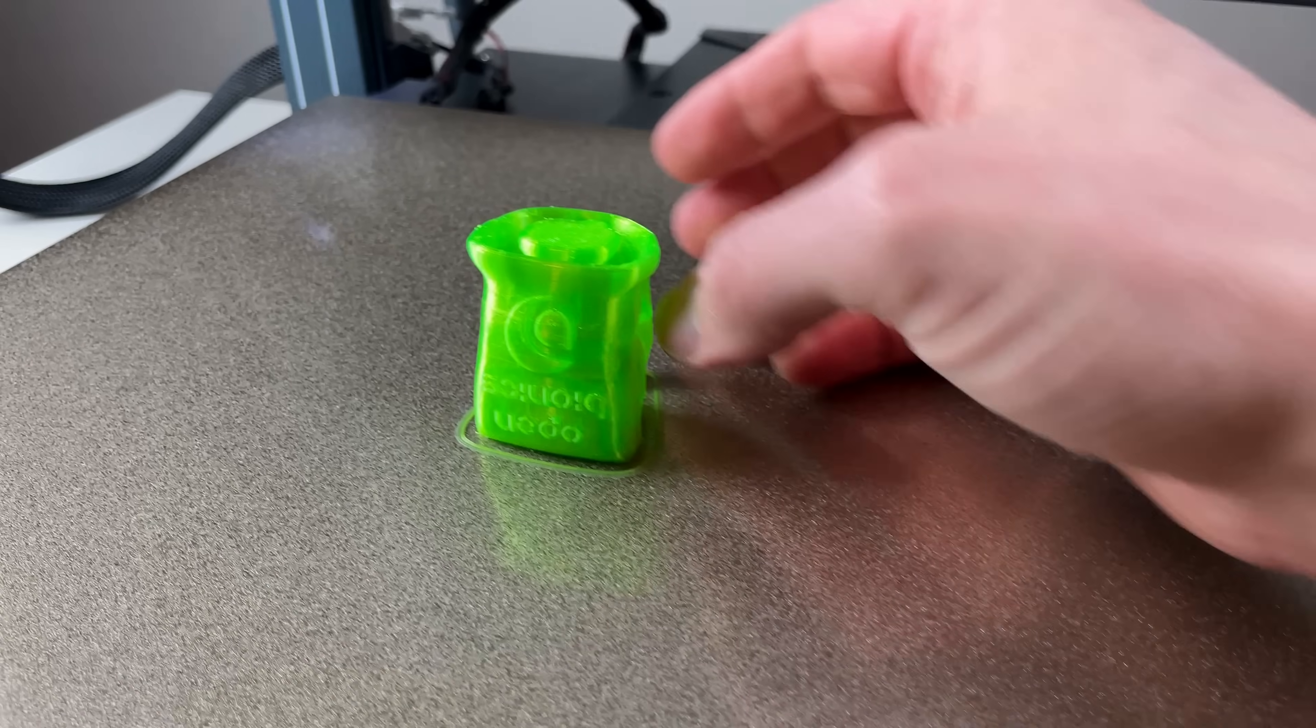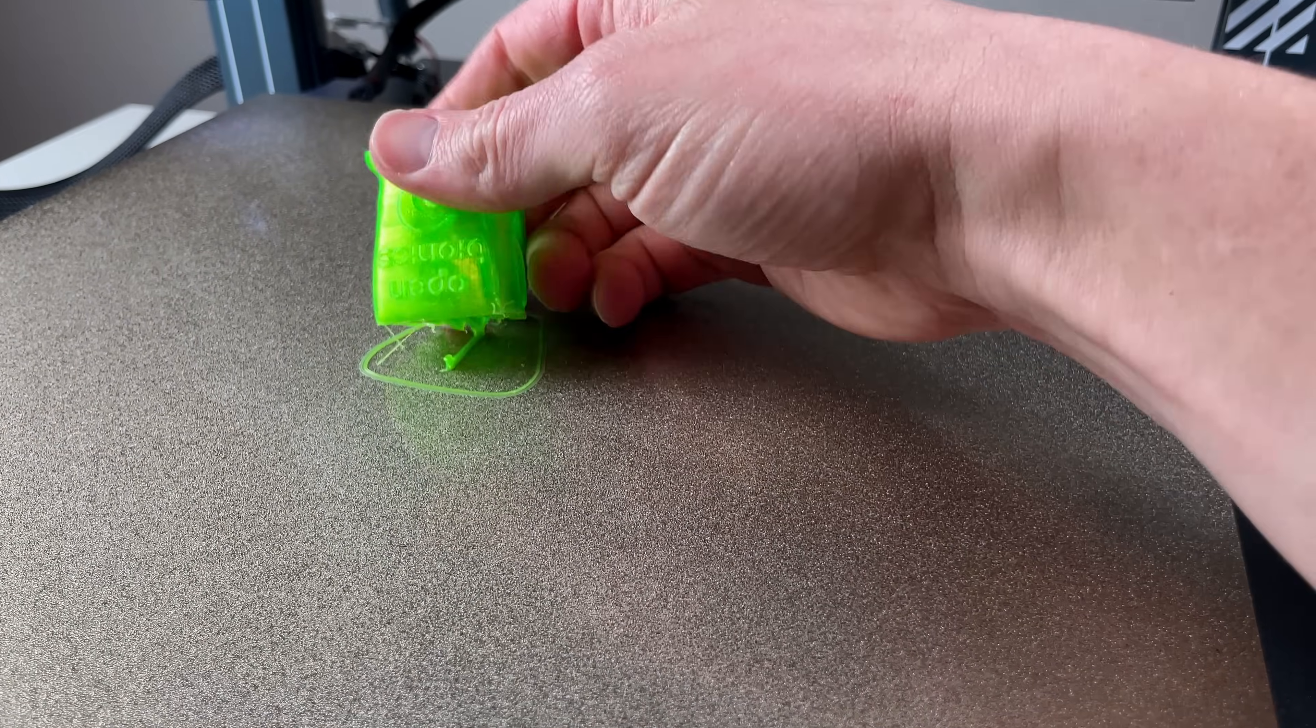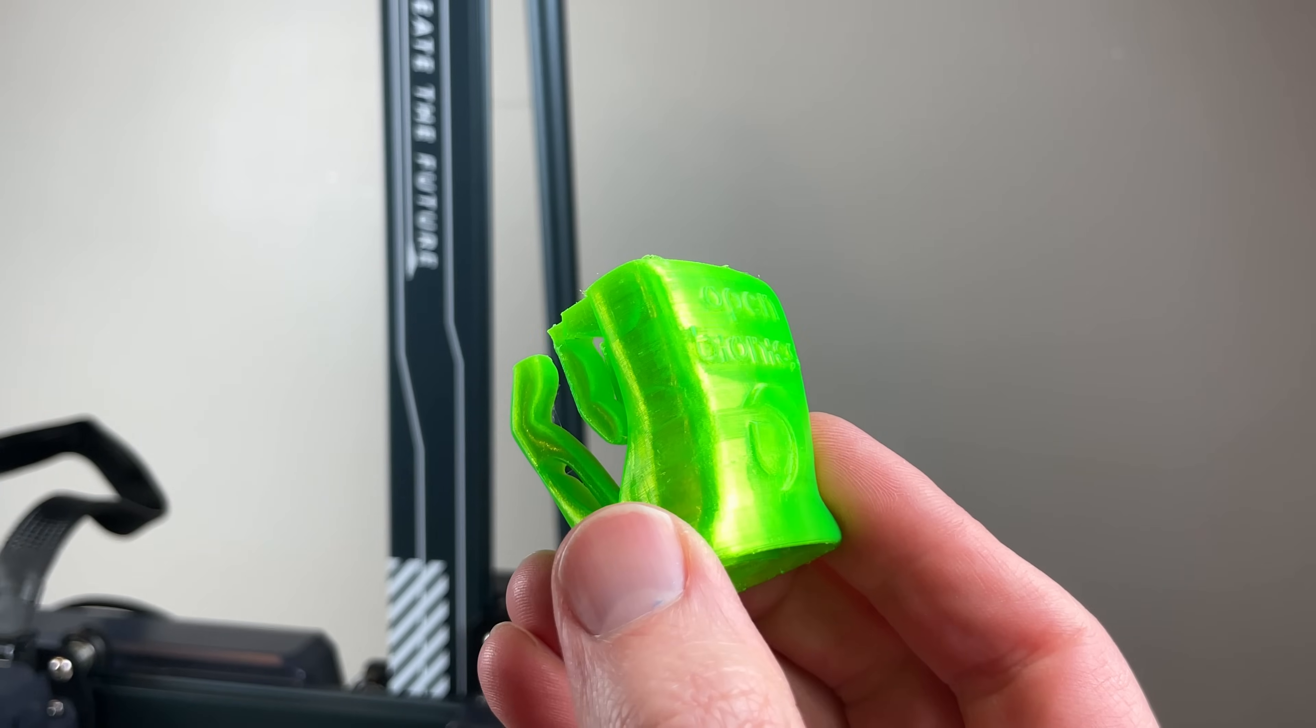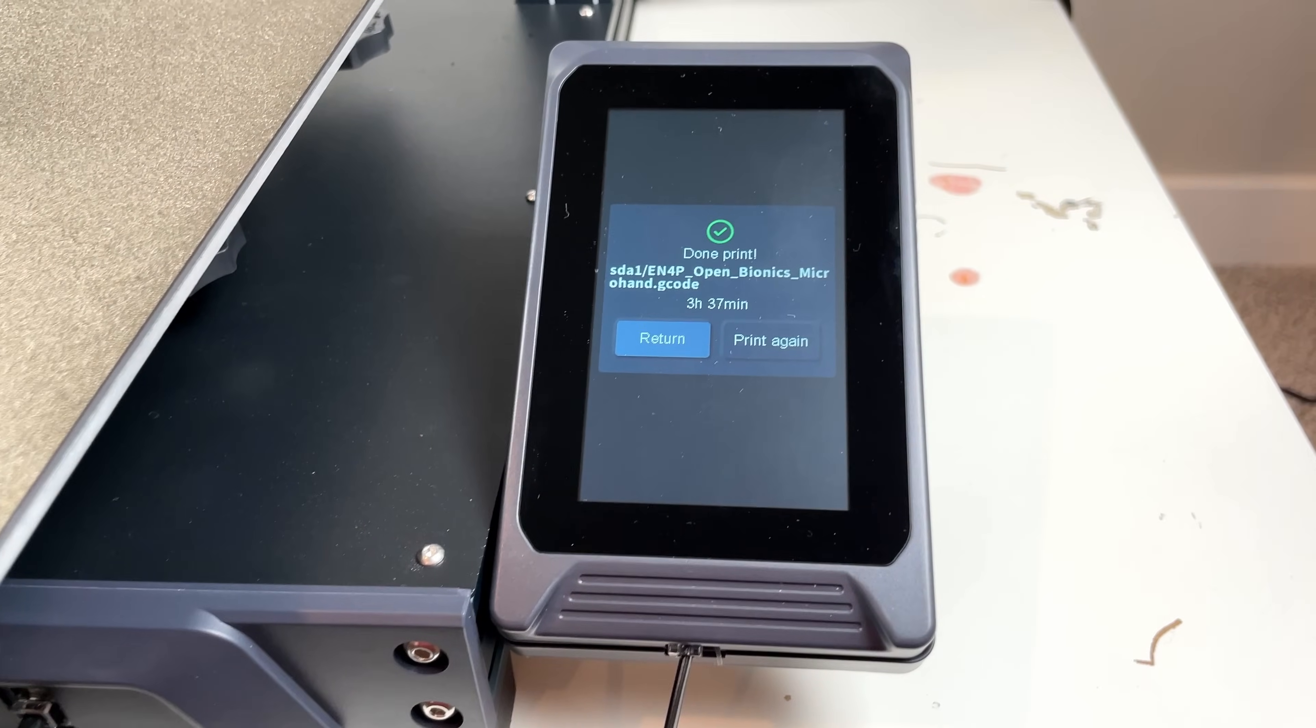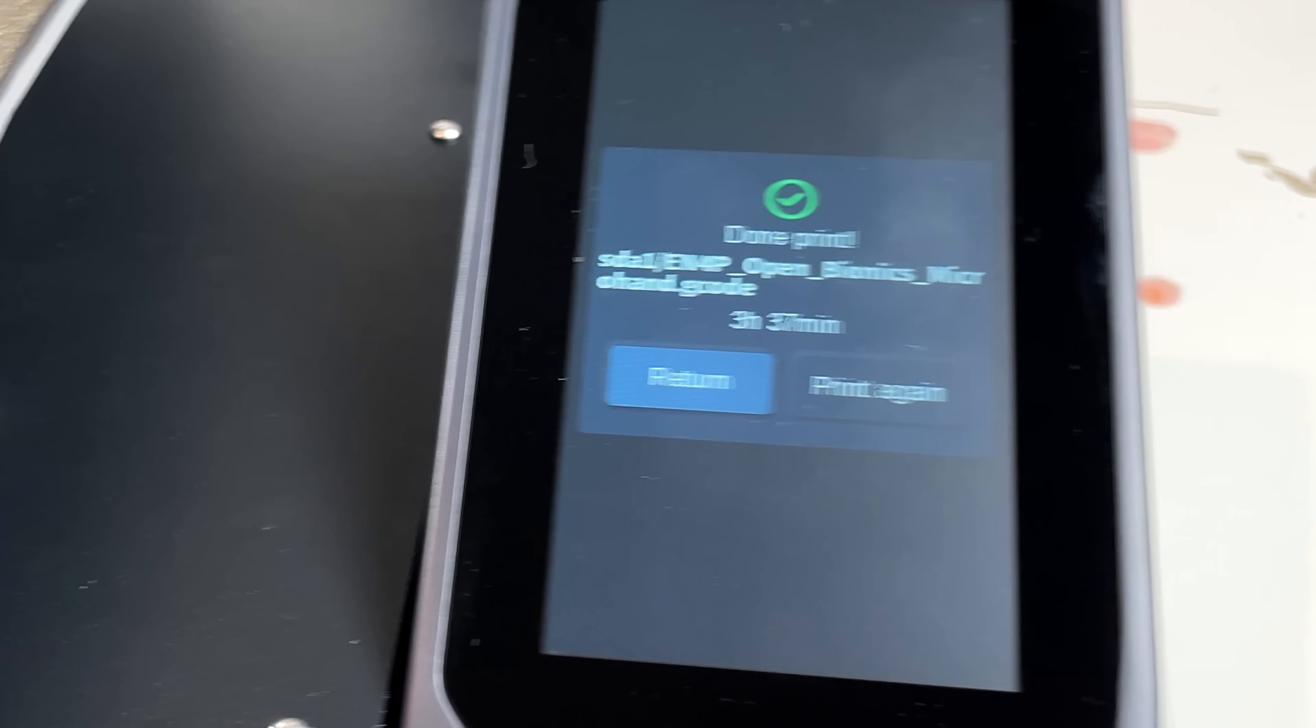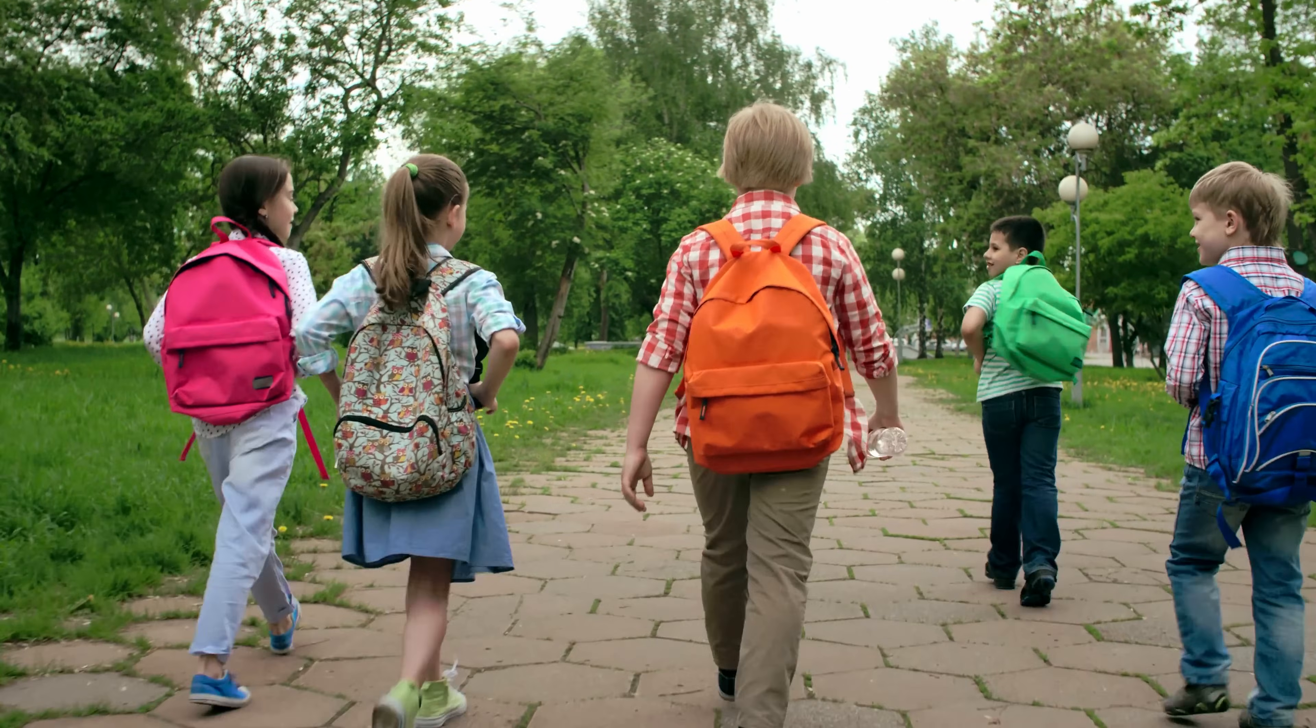My kids love the Open Bionics TPU hand. They're constantly asking to print them for their friends and thought it would be fun to give them away instead of candy next Halloween. Crazy idea. The only problem is, these prints take three and a half hours each. We have a ton of kids in our neighborhood, who knows how long it would take to print enough for everyone.